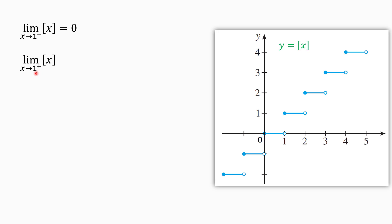But what is the limit of this function as X approaches 1 from the right? As X approaches 1 from the right, the values of X are greater than 1 — for example 1.1 or 1.01. If we round a number greater than 1 down to the nearest integer, we get 1. So the right limit equals 1. We can also find the right limit from the graph: if we get closer and closer to 1 from the right, the corresponding y-values are constantly 1, confirming the right limit equals 1.